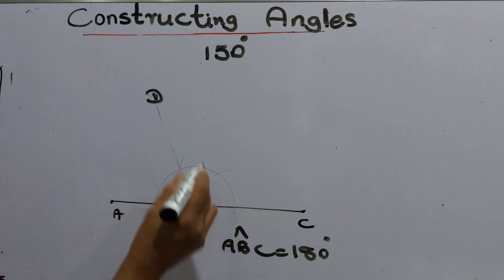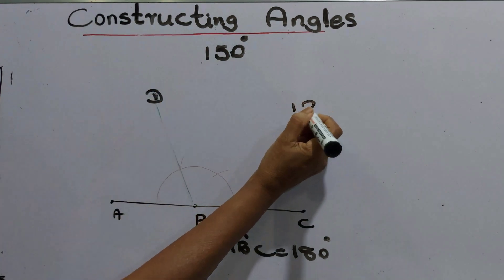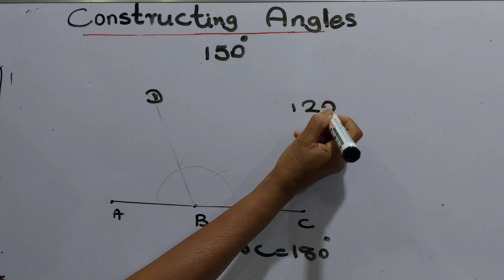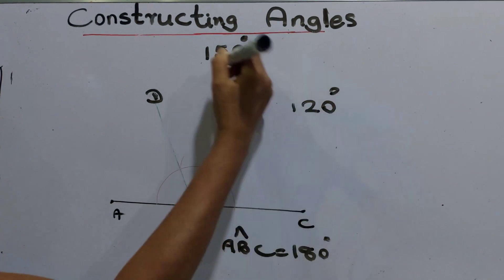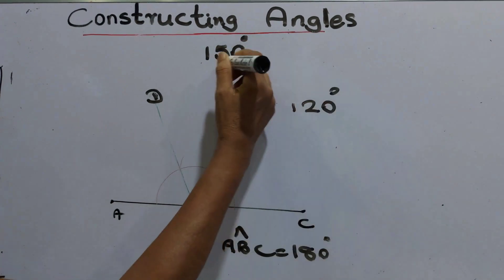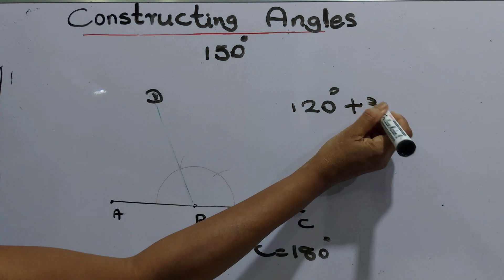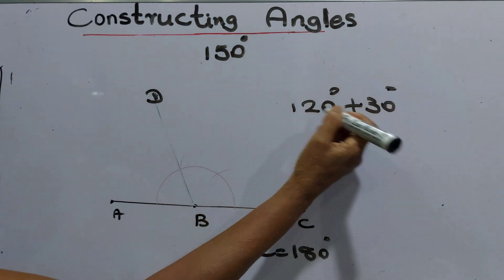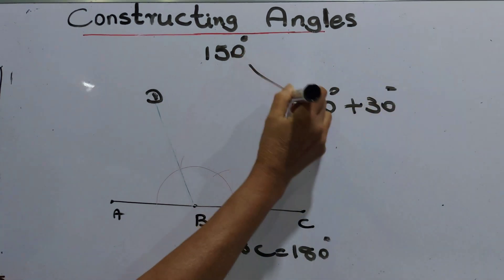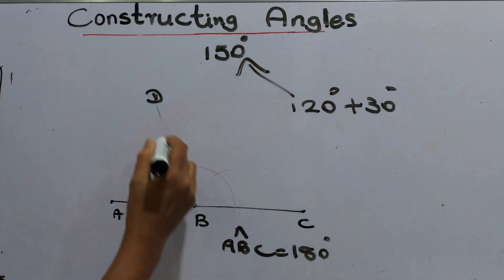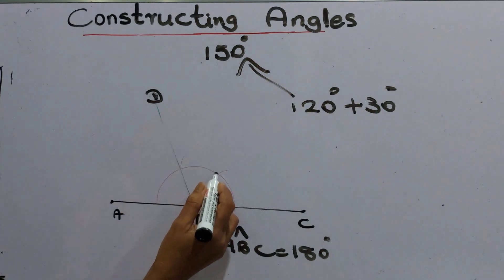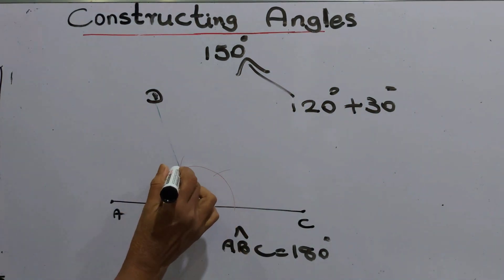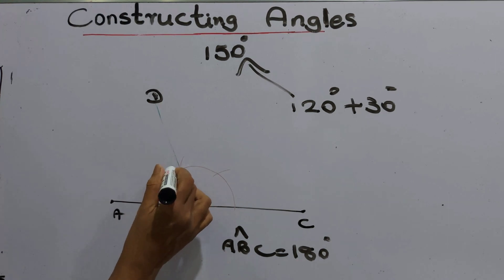This is 120 degrees. We are going to construct an angle of 150 degrees, so we have to add another 30 degrees to make 150 degrees. From here to here is 60 degrees, from here to here is 120 degrees, and then there is another 60 degrees here.